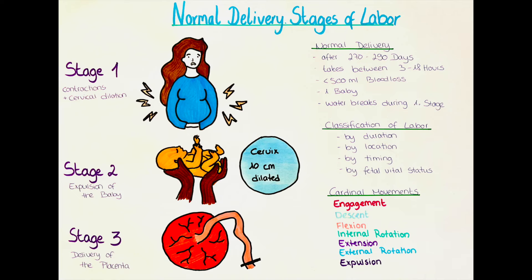One way to classify fetal descent is by the fetal station, which describes how far the baby's head has dropped into the pelvis. An imaginary line is drawn through the ischial spines — this point is station zero. Everything above the ischial spines gets a negative score and everything below it gets a positive score. Flexion describes how flexed the fetal head is; the head should be flexed toward its chest to reduce the overall diameter. Flexion is usually promoted by resistance from the cervix, the uterus, and the pelvic floor. As the baby descends further, it goes through the rest of the movements to accommodate its diameter to the different pelvic levels.